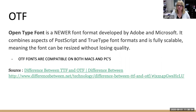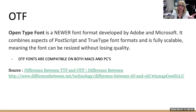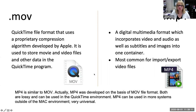If you get both TTF and OTF options, choose OTF because it goes across multiple platforms and it's a newer format. If you only get a TTF, then use the TTF. Now, .MOV is a native file that comes out of iMovie. There are a few applications that create .MOV files, but iMovie is the most common one.